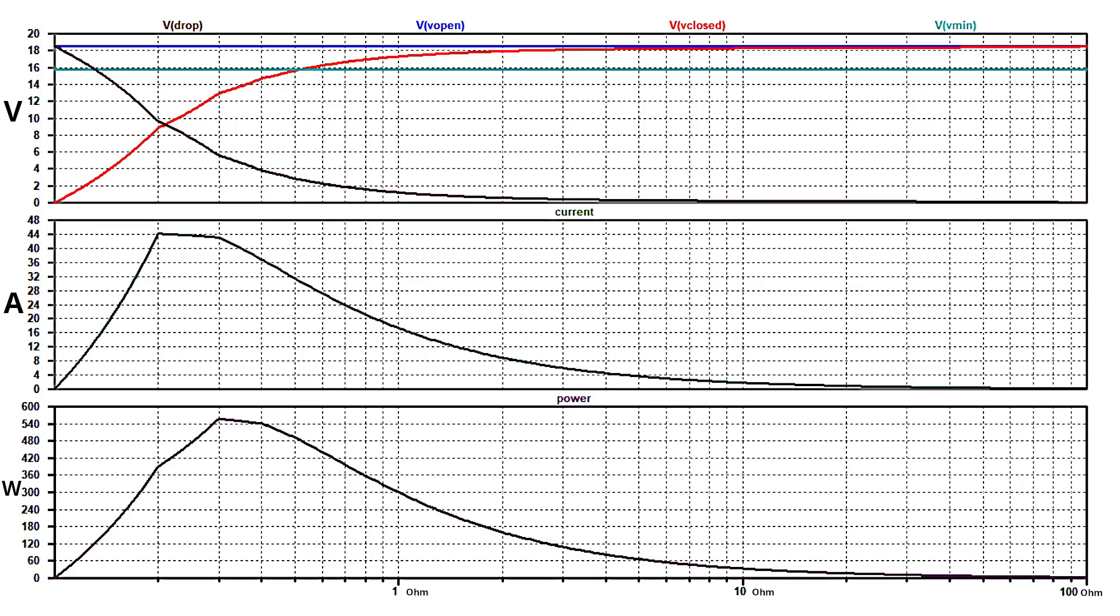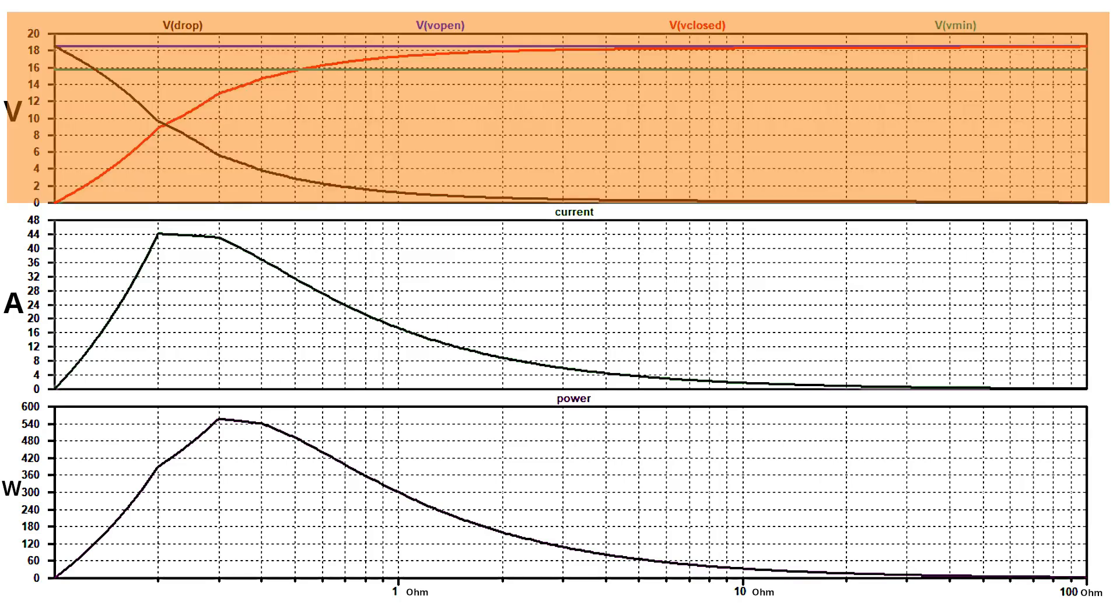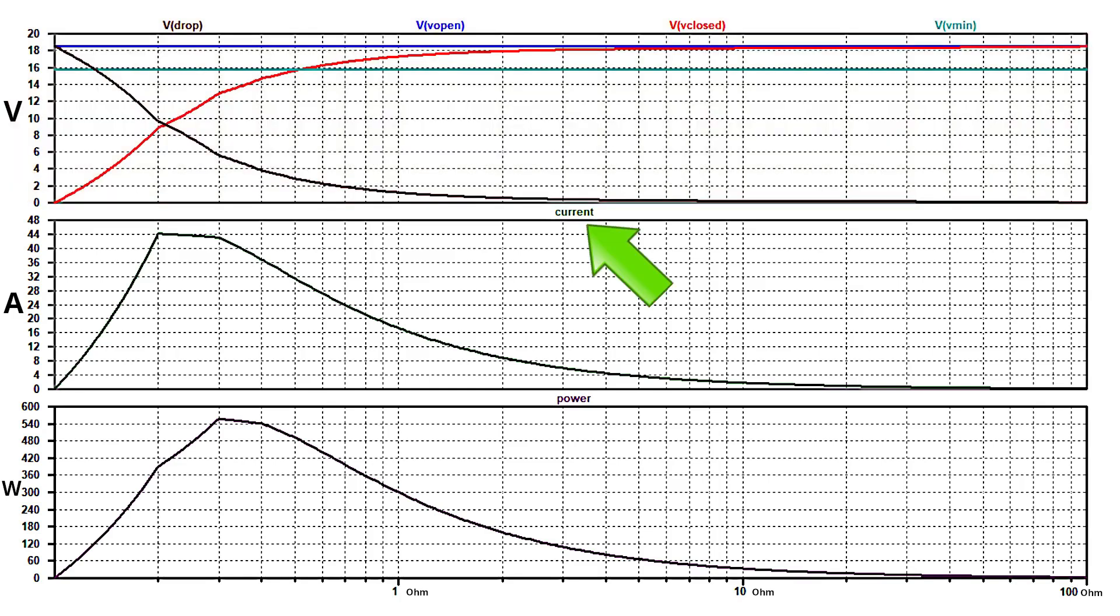Let's examine the three graphs. The top graph displays the voltage readings. The x-axis in logarithmic format represents the load impedance in ohms. The first curve represents the voltage drop. The second curve represents the open loop voltage. The third curve represents the voltage as a function of the load.